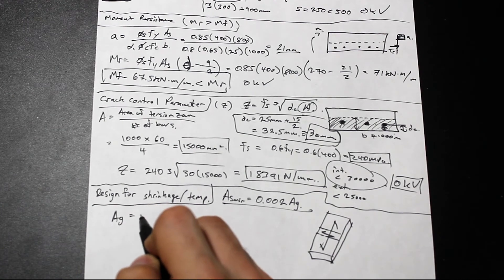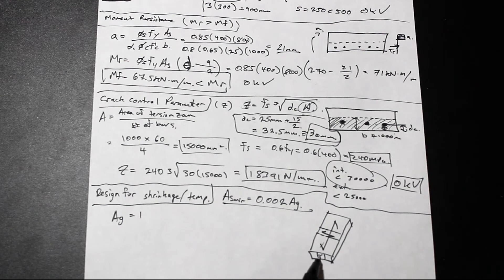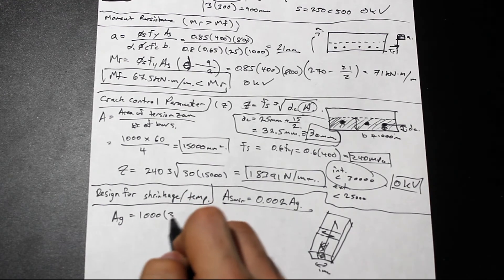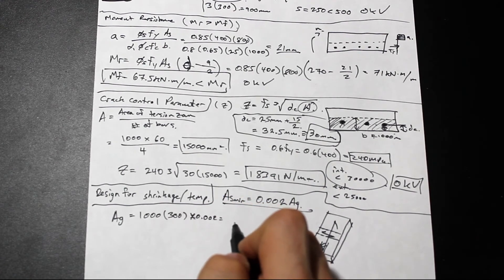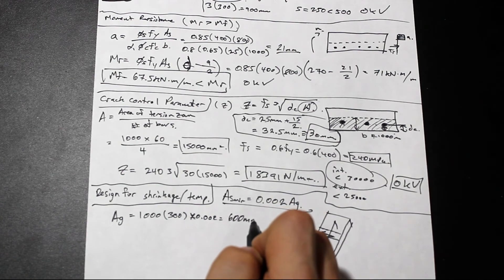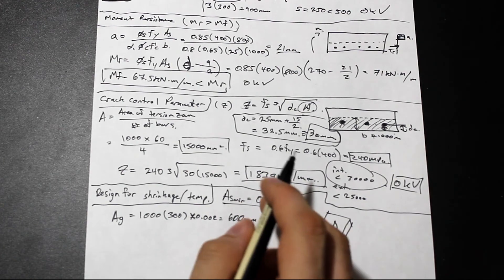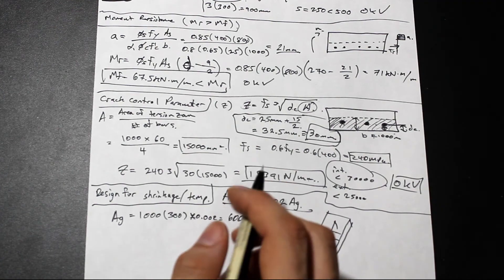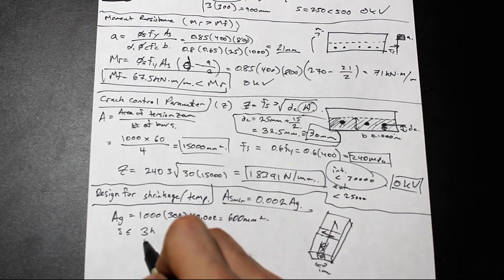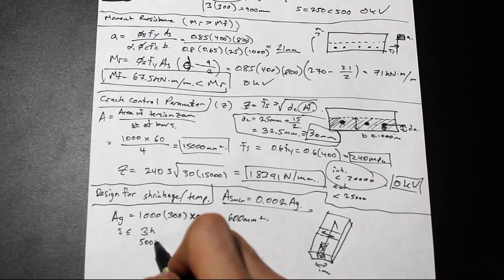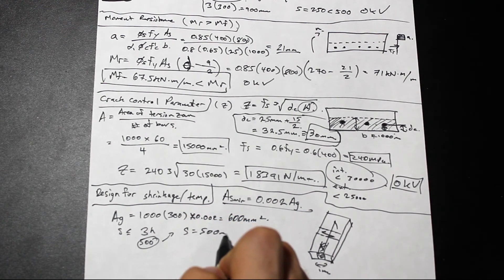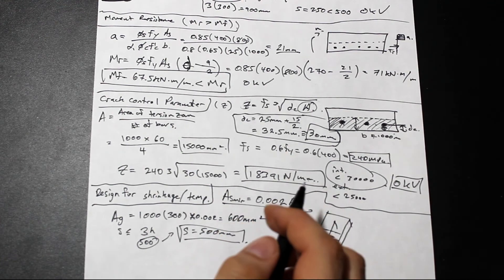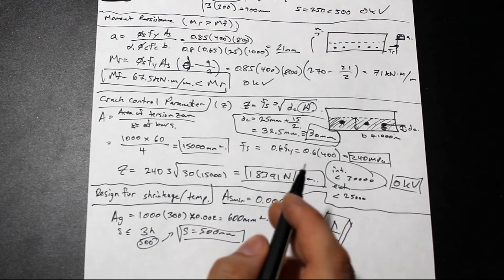Our AG, we'll do it in a meter strip as well. So one meter strip this way. AG is simply going to be one meter times the height times 0.002. We're going to get 600 millimeters squared. The maximum bar spacing again is the smallest of 3H and 500. As we did before, 500 governs. So we're going to use 500 millimeters for the spacing for our minimum reinforcement.